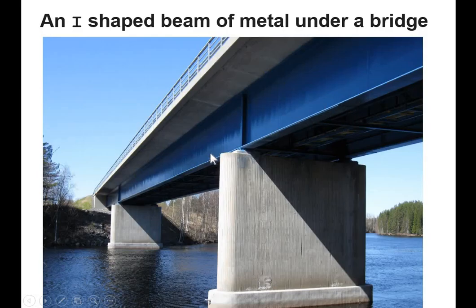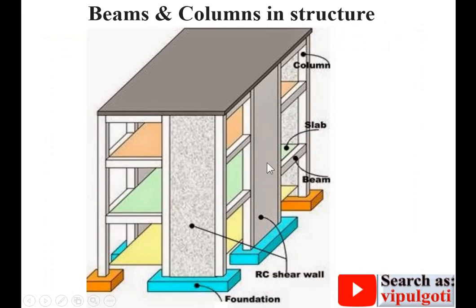Here you can see a beam having an I cross-section — this is a metal beam, an I-shape beam of metal under a bridge, which is a horizontal structural element. In this figure, you can see the column, which is a vertical structural element — there are many columns visible here. This is also a beam, a horizontal structural element.